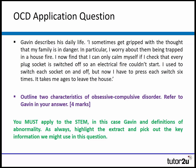The same principles apply as before — you must apply to the stem, in this case Gavin, and highlight the extract and pick out the key information that you might use in this question, applying to OCD.